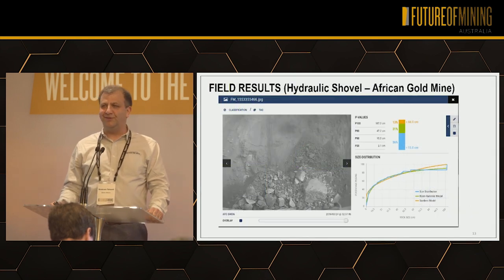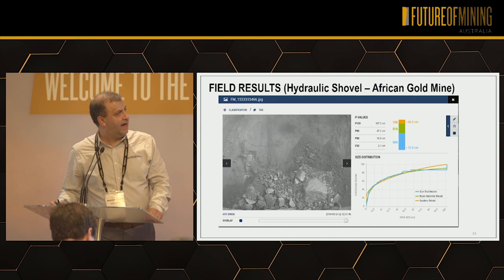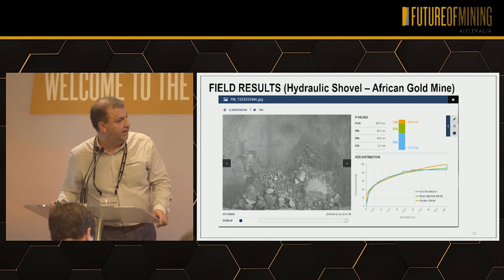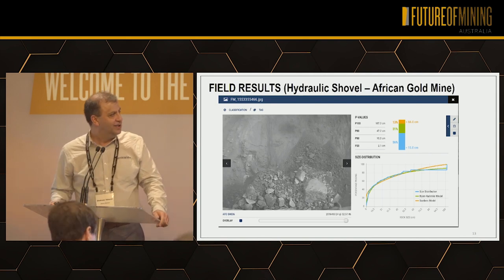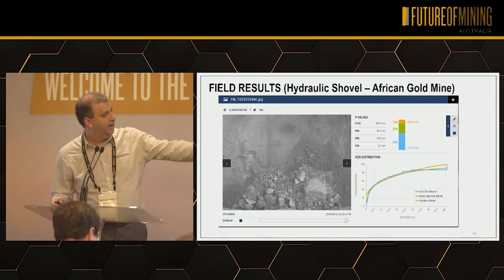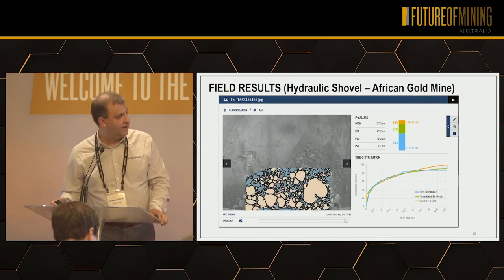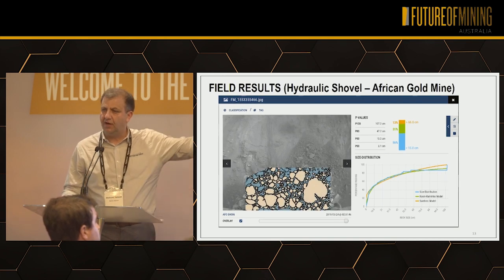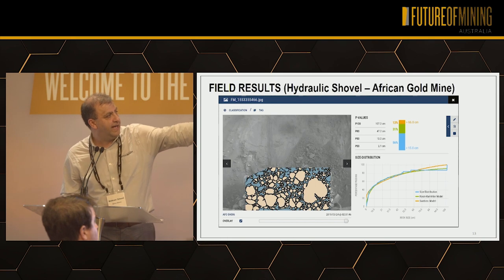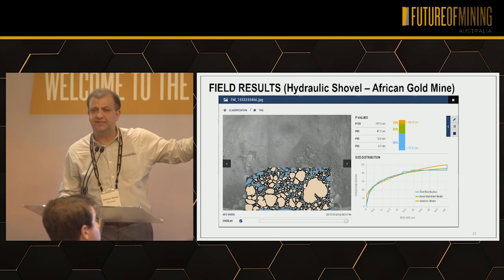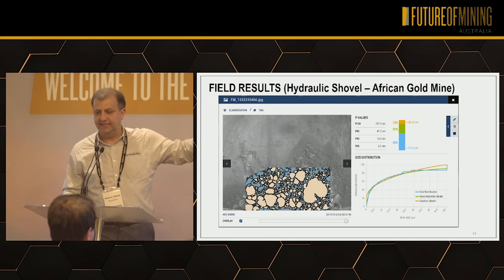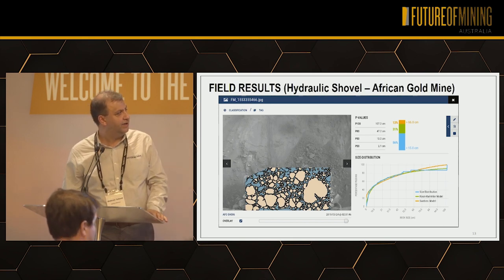Now I promised to show field results. This is an African mine, a hydraulic shovel. The image was taken on the 24th of March — very recent. That's the result of AI: it perfectly identified the big rock and small rocks. The blue means fines. On the right-hand side you see the distribution: the green area is where acceptable sizes are, red is oversized — you see those big rocks — and blue is undersized.